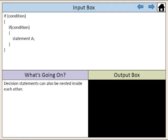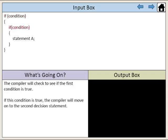Decision statements can also be nested inside each other. The compiler will check to see if the first condition is true. If this condition is true, the compiler will move on to the second decision statement.